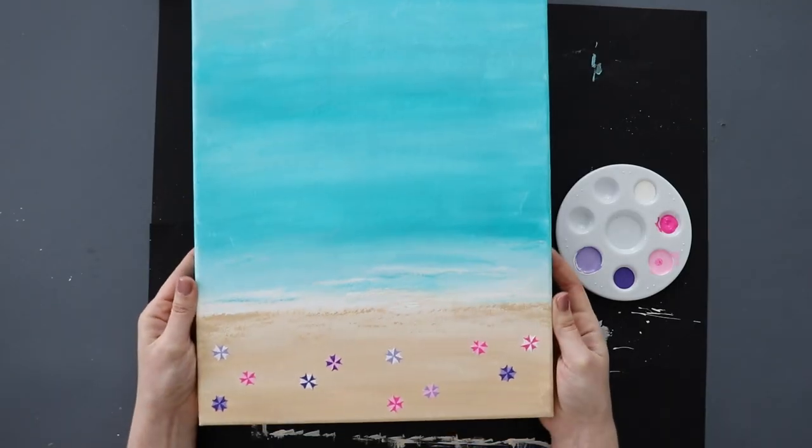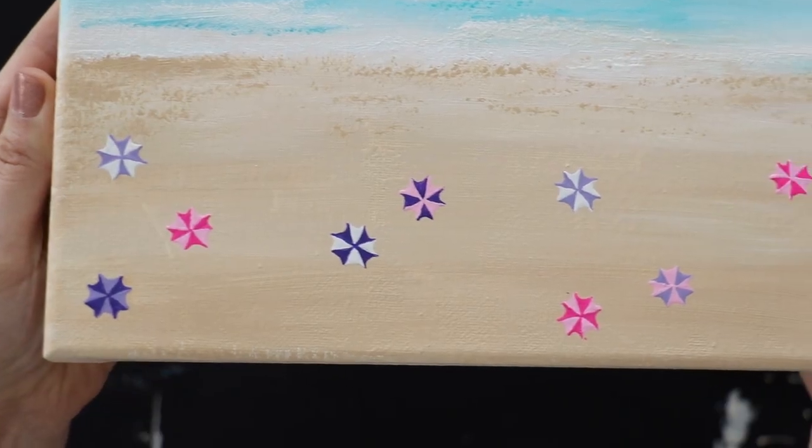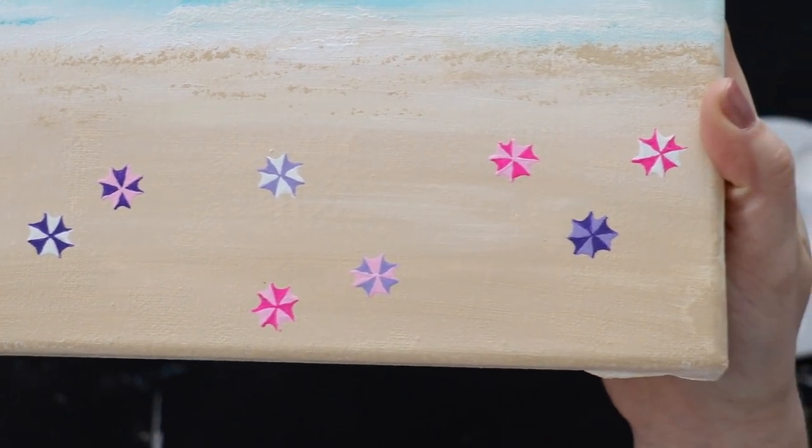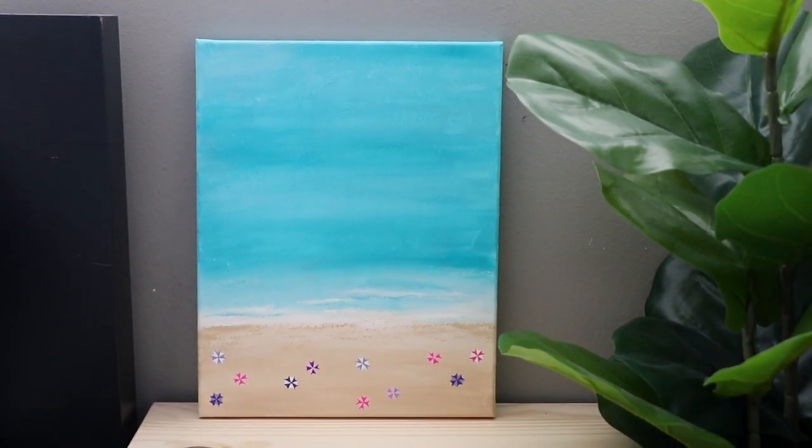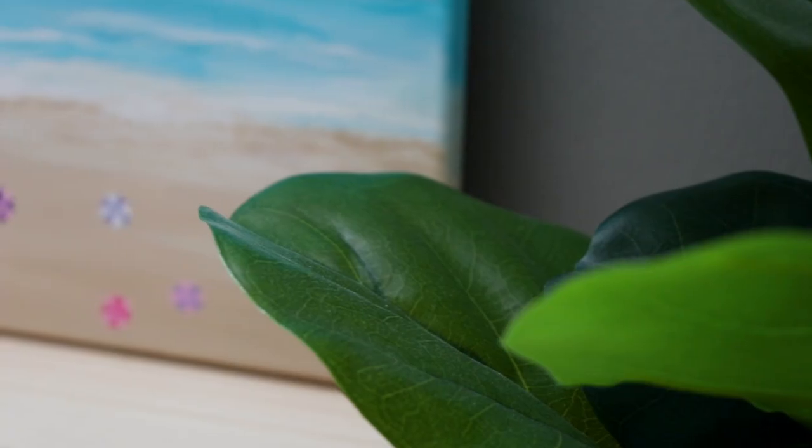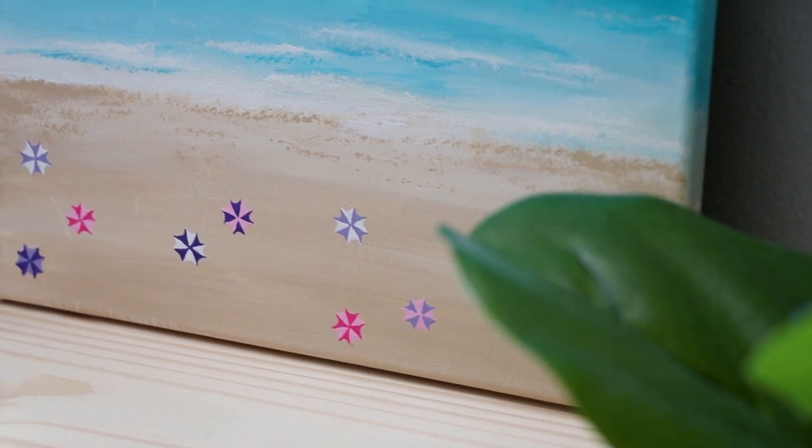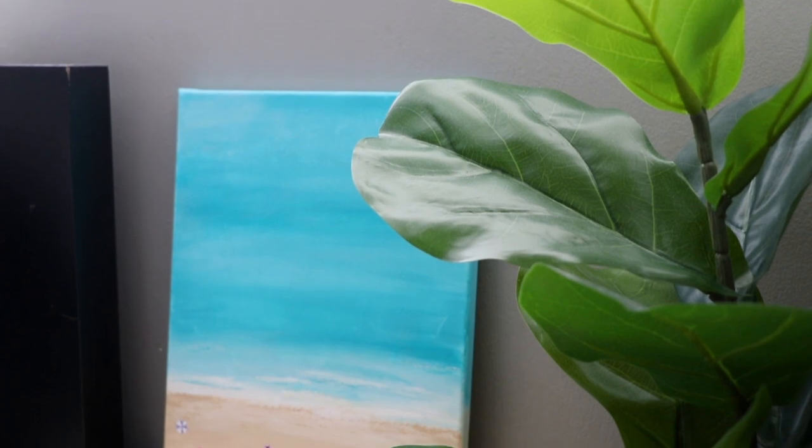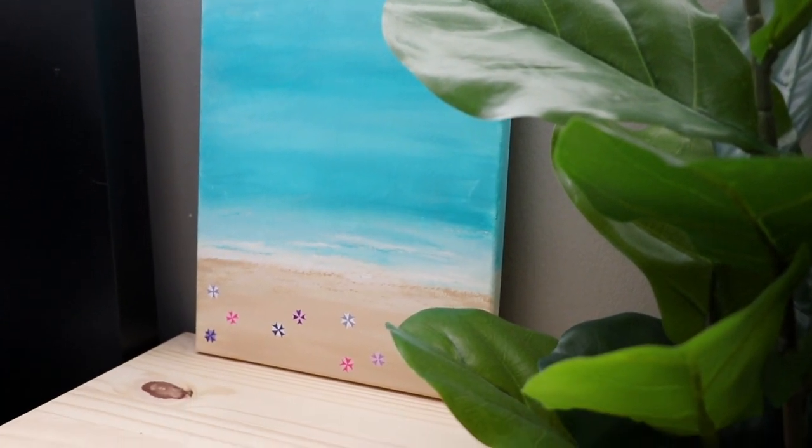And that's it. Look how cute this turned out. It was so easy to do. Just like with any painting, you can customize this however you want. You can add a little more detail, maybe some beach towels or some people in the water. This is your artwork, so you do you. You can Google overhead beach photography if you want to get even more inspiration. And then once you're done, you can put it on display and bring the beach inside.